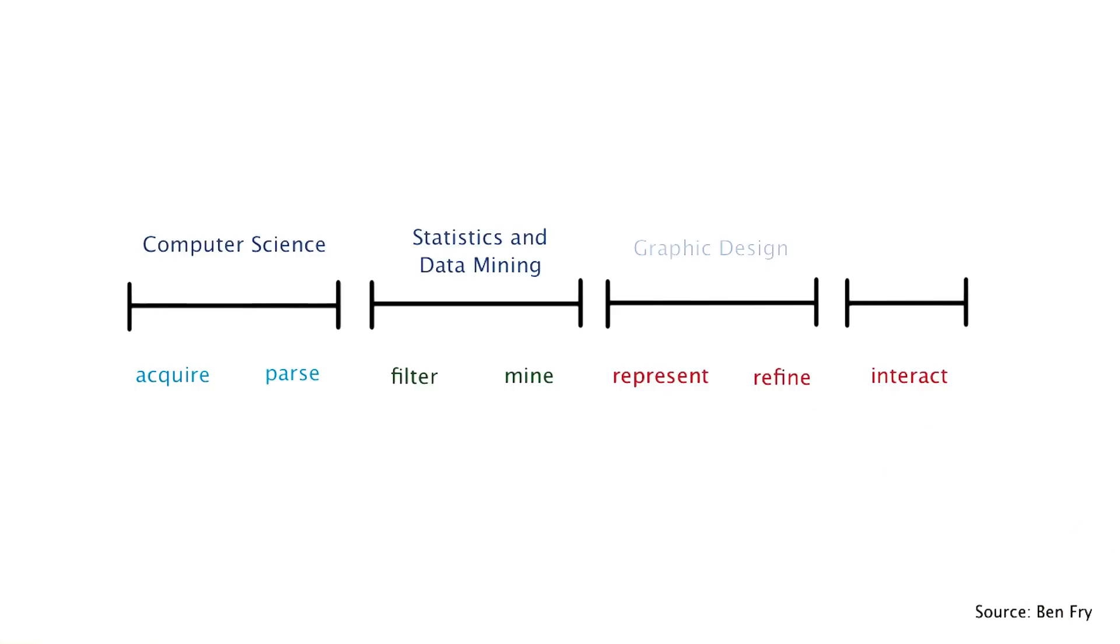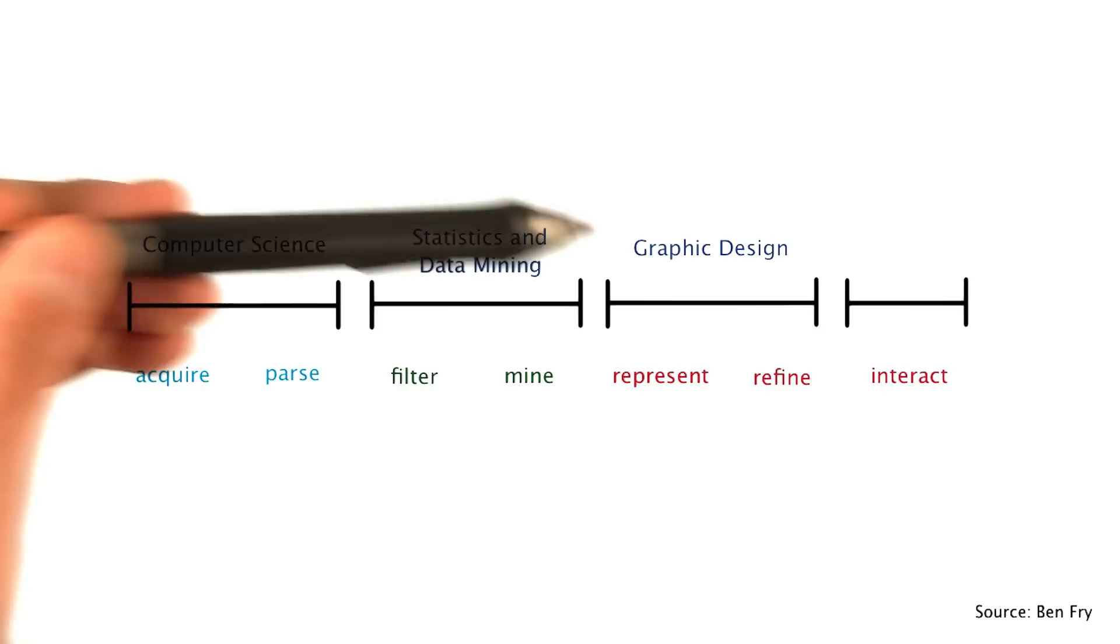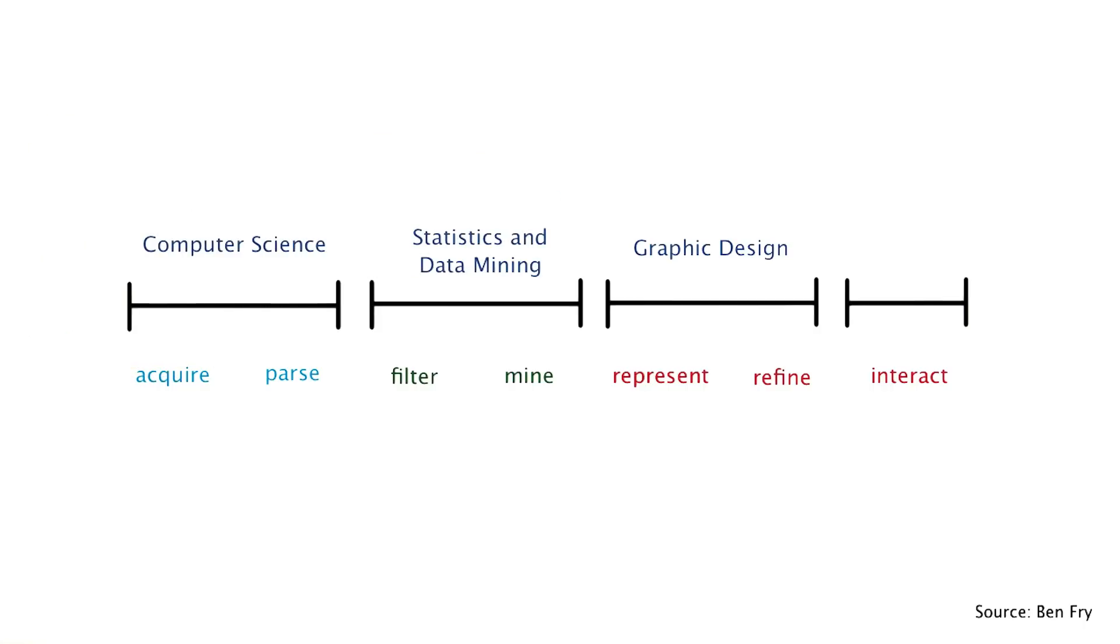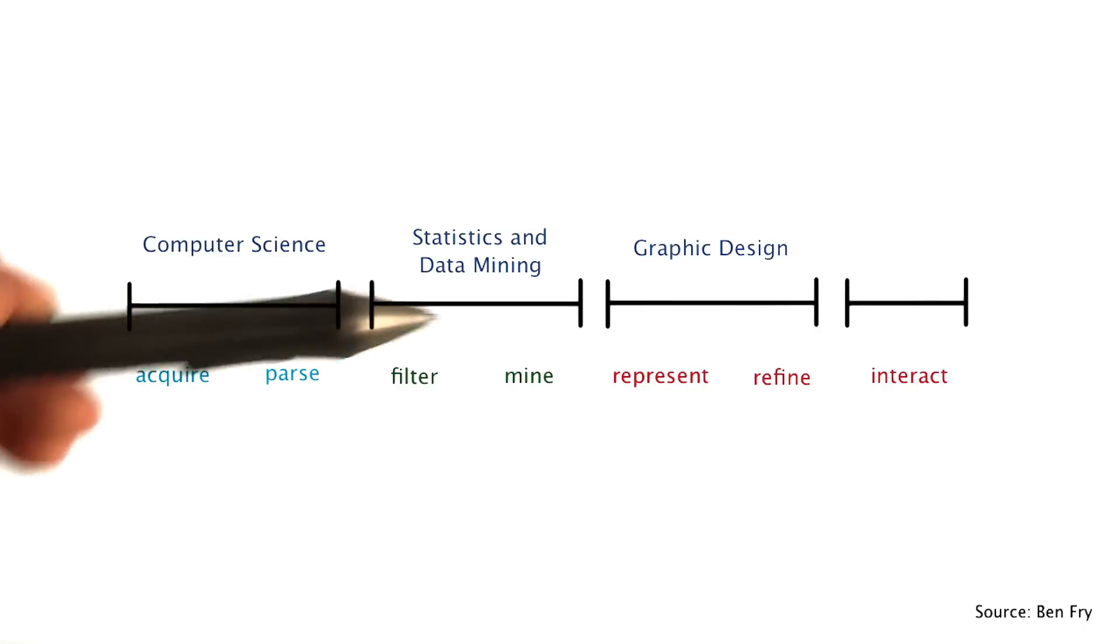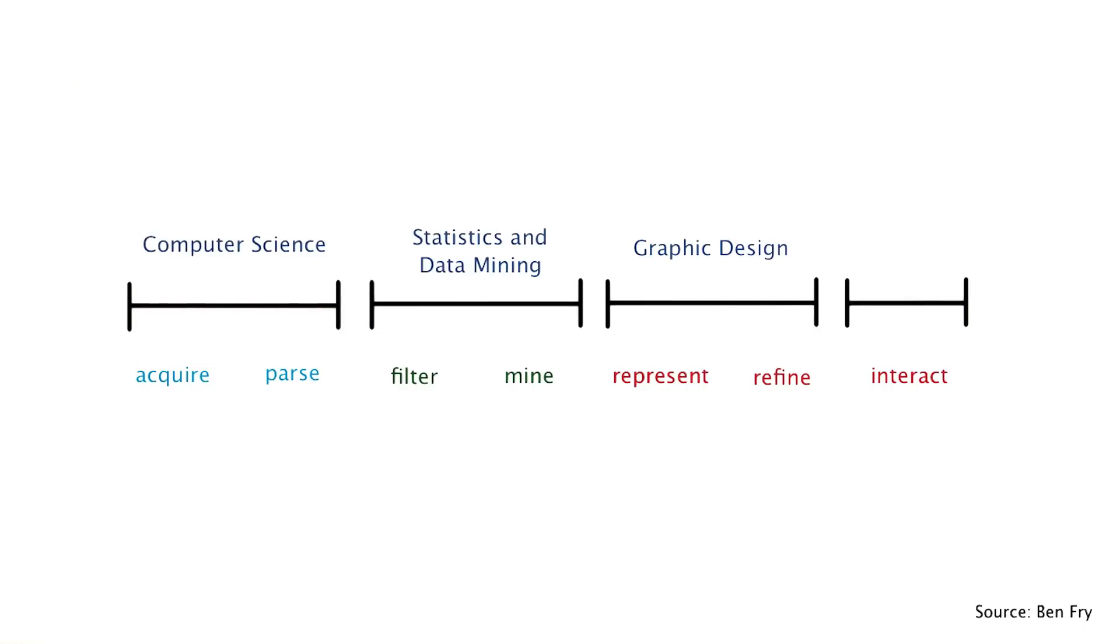The third stage here focuses on the visual representation of your data and how you present it graphically. Thus, is most associated with the fields of graphic design and visualization theory. It is in this third stage that we experiment with different visual encodings to present our data in the most effective manner.